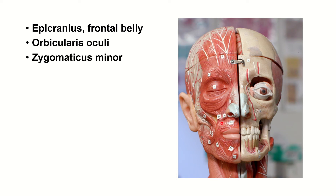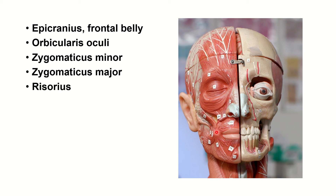For the zygomatic muscles, there are two of them: zygomatic minor and zygomatic major. You can see the minor is superior to the major. Risorius is important for a smile. You also have the orbicularis oris. Both orbicularis muscles are responsible for closing their respective areas — orbicularis oculi is for the eye, and orbicularis oris is for the mouth.